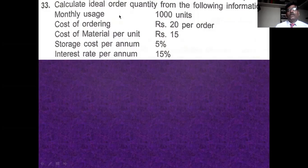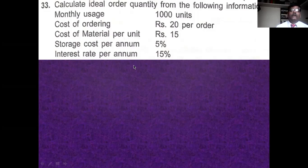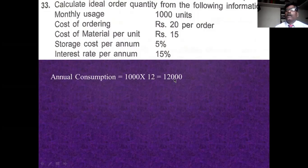Monthly usage is 100 units, so annual consumption = 100 × 12 = 1,200 units. Ordering cost is 20 rupees — straightforward. Cost of material is 15 rupees. Storage cost = 5% of 15 = 0.75 rupees per unit.